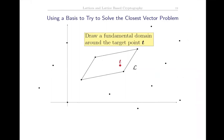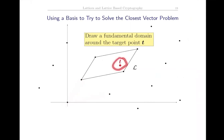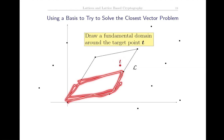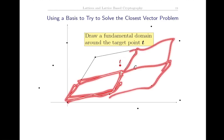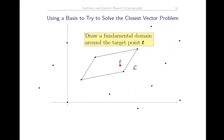How does one try to solve the closest vector problem? Take the fundamental domain for the basis and translate it so the target point is in the translated fundamental domain. Mathematically, express t as a real linear combination of the basis vectors. Then take the greatest integer of each coefficient, which gives you the fundamental domain containing the target vector. Pick the closest vertex in that fundamental domain, and that's your candidate - and you've found the closest lattice point to the target vector.